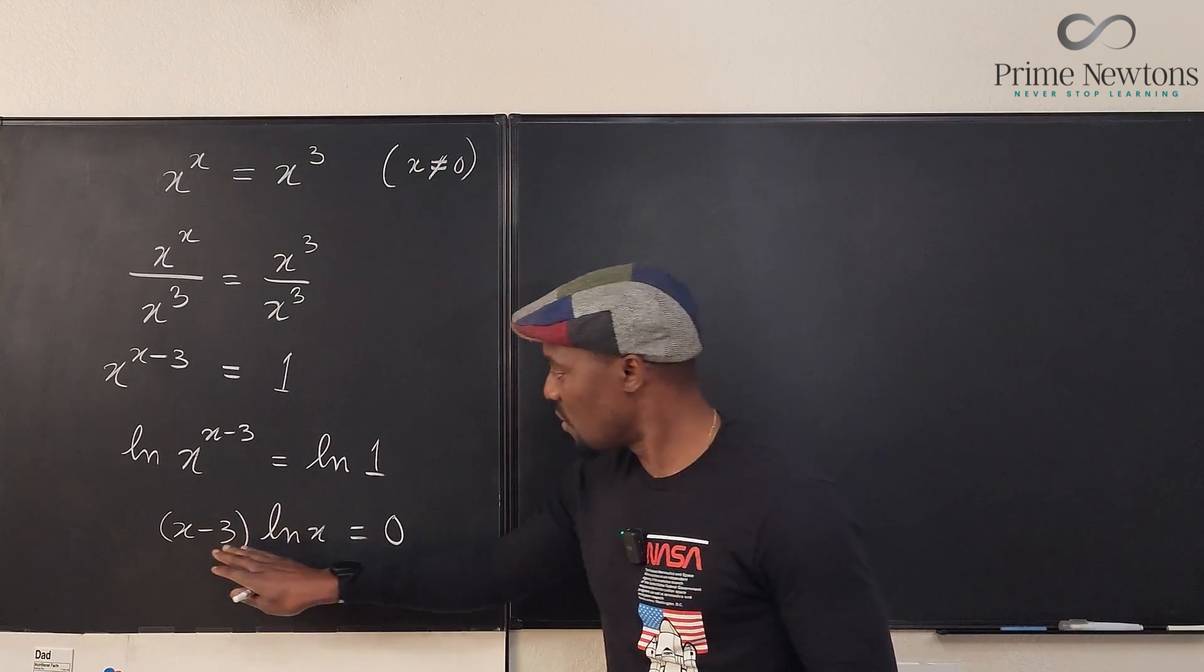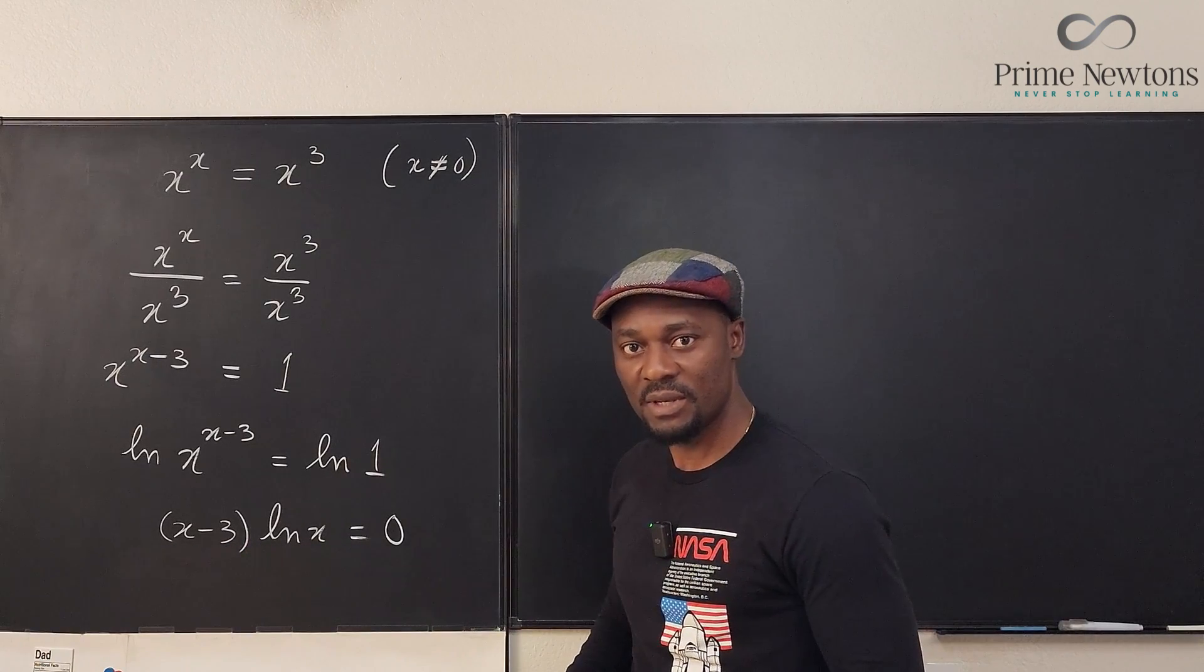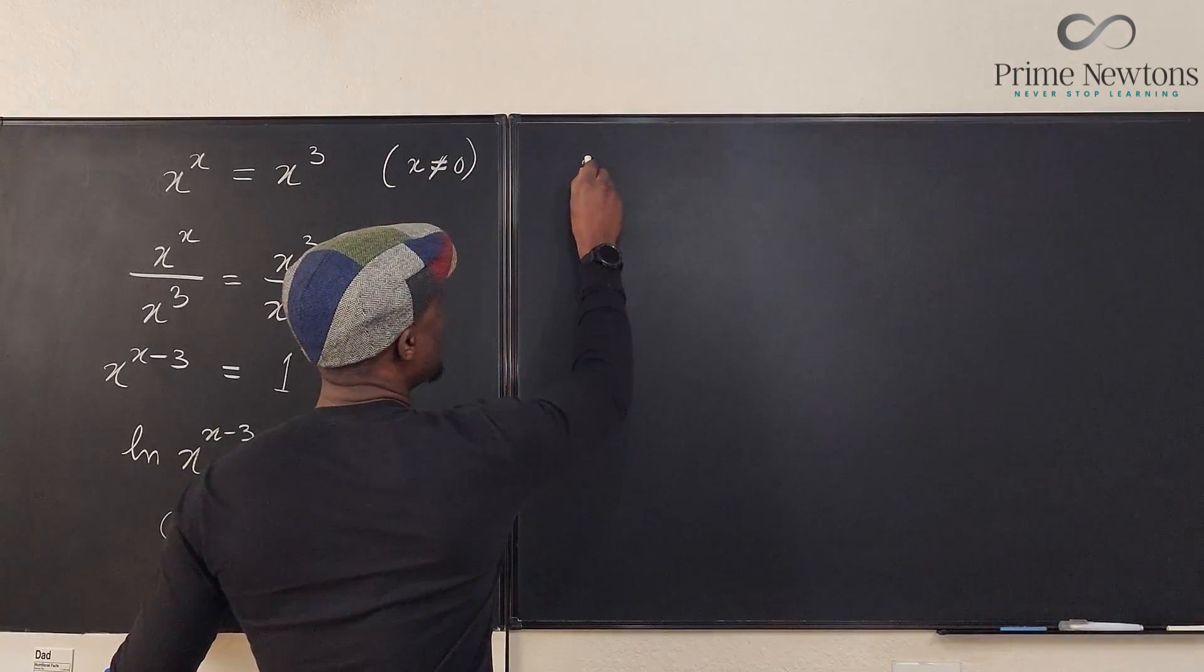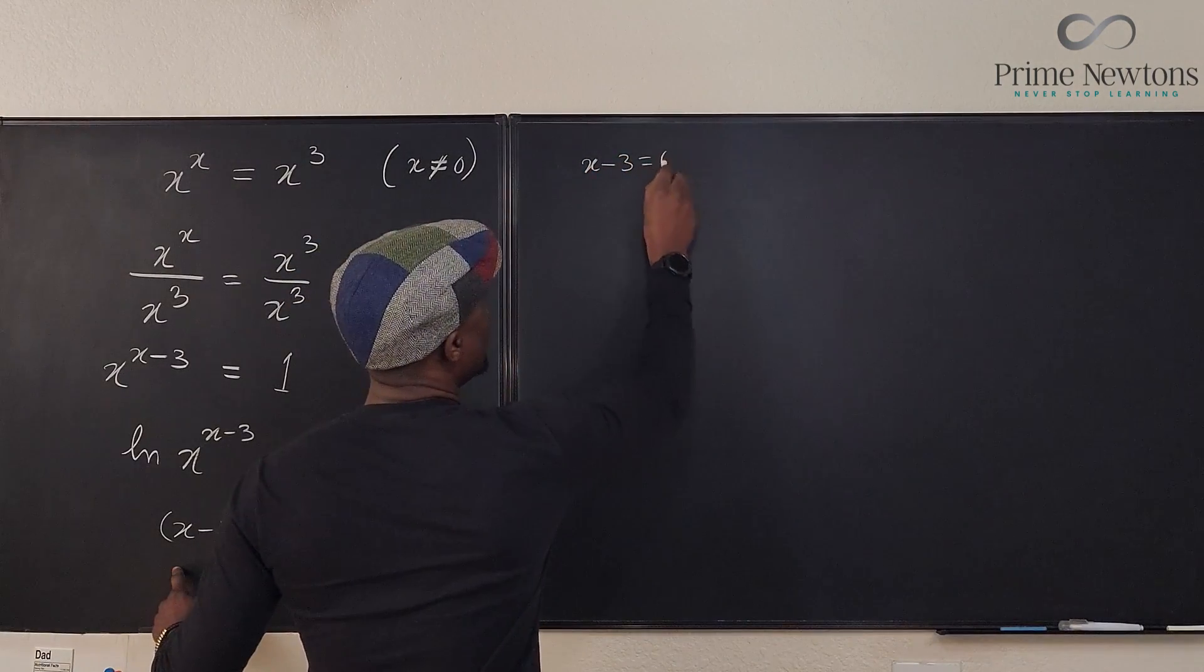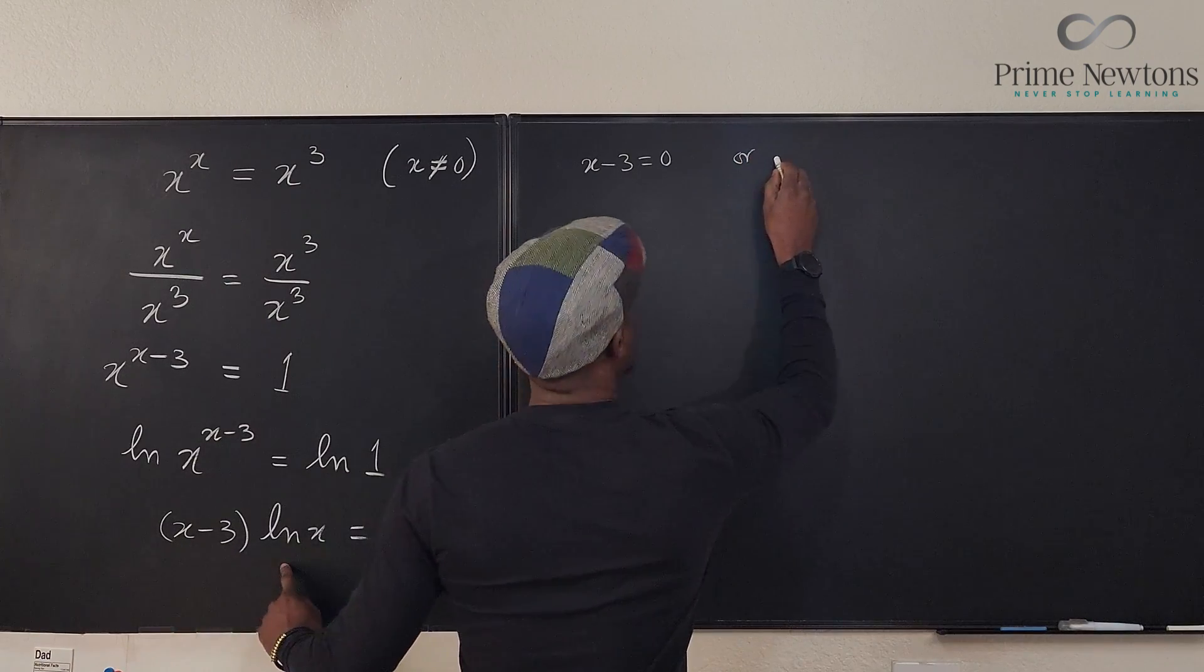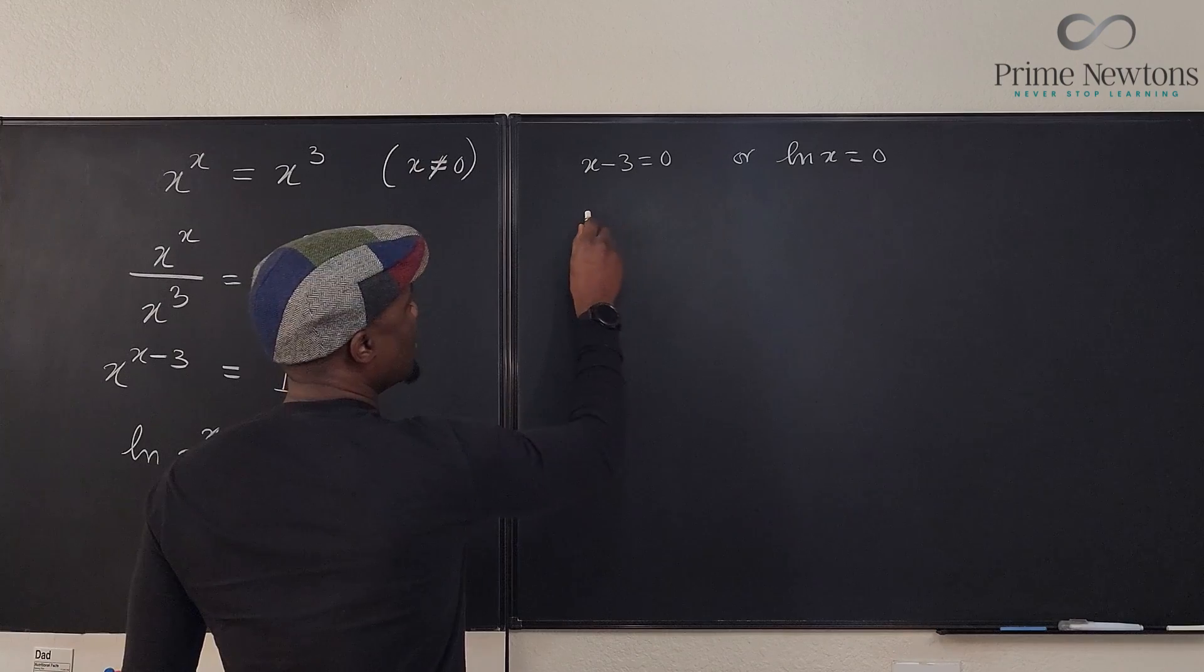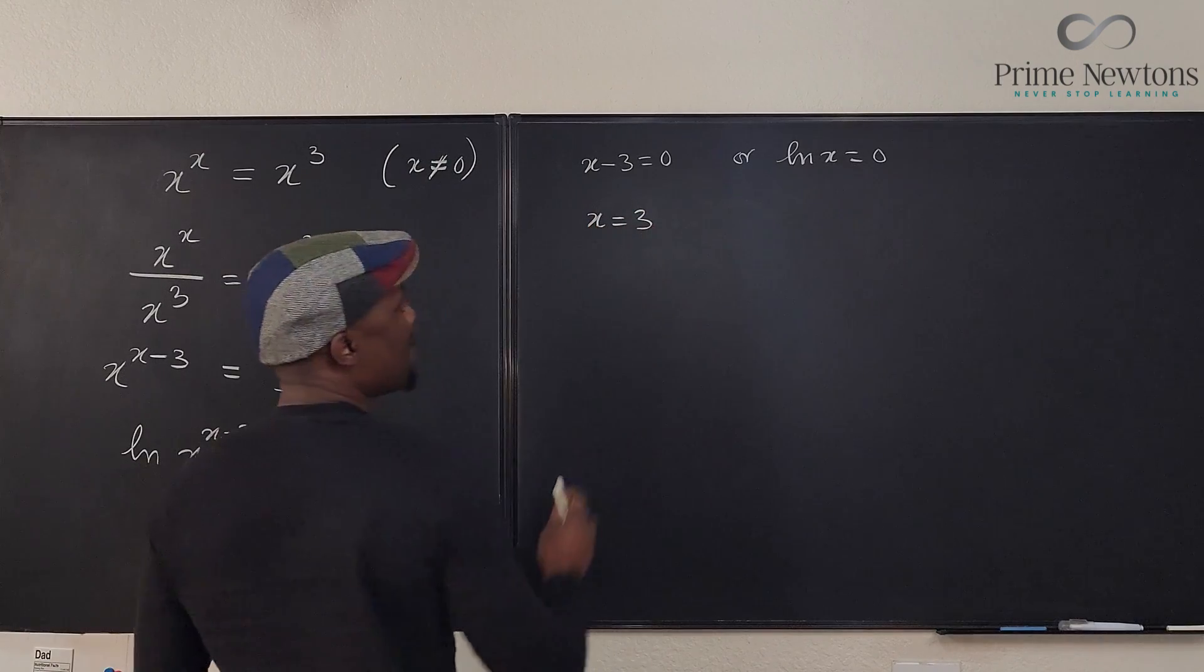So let's see. We can say x minus 3 equals zero or ln of x is equal to zero. By this, x equals 3 is the first answer we're going to get.